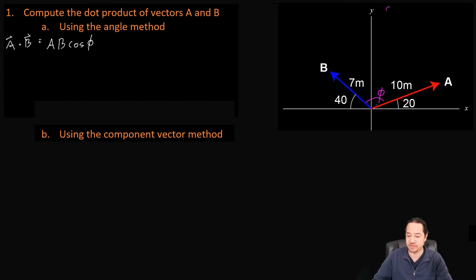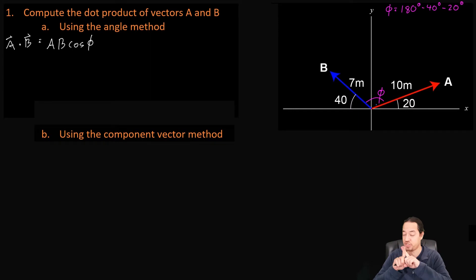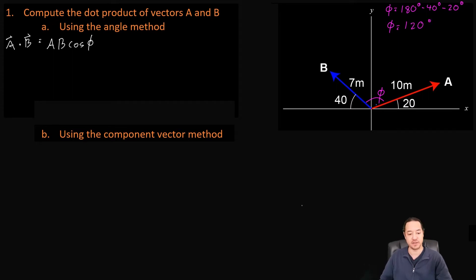What is phi going to be? Phi is going to be 180 degrees minus 40 degrees minus 20 degrees. So you can see this is 180 minus 40 minus 20, which gives us our phi — the separation between the vectors. That is going to be equal to 120 degrees. So that's going to be our phi.